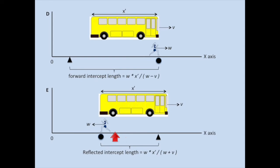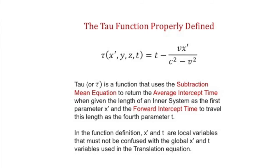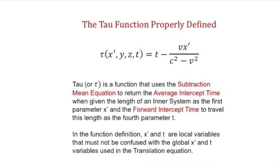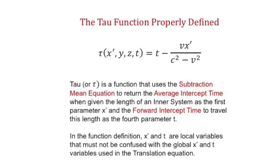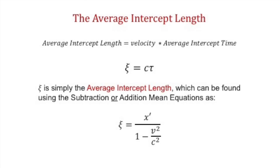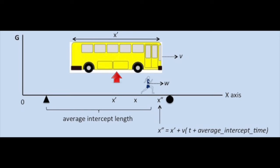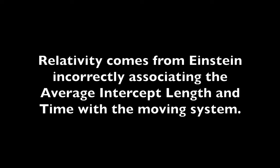Second, Einstein fails to recognize the explicit use of the oscillating system as a second moving system. So when he finds the average intercept time and length, he doesn't associate them with the oscillating system. That's because in relativity, the oscillating system doesn't exist — even though he uses equations associated with one. Third, Einstein doesn't understand the tau function; he mistreats it as an equation and fails to understand that it finds the average intercept time. Because he doesn't realize he has an average intercept time, he fails to recognize that when he multiplies it by c, he gets the average intercept length.